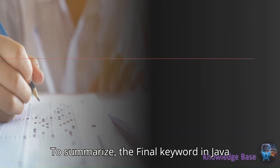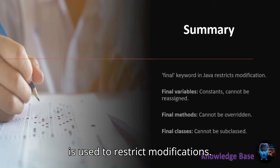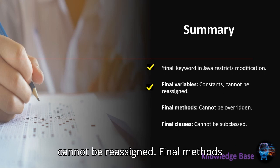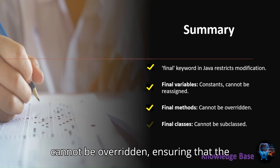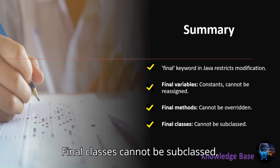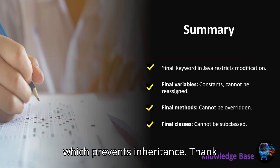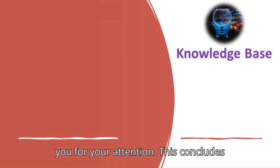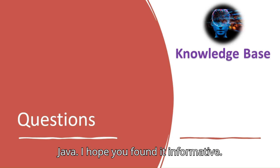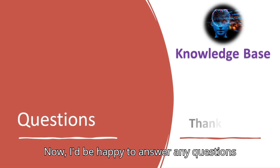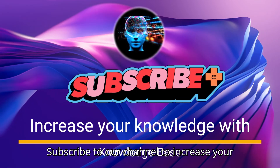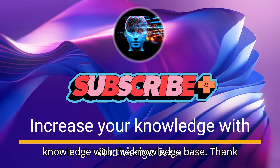To summarize, the final keyword in Java is used to restrict modifications. Final variables act as constants and cannot be reassigned. Final methods cannot be overridden, ensuring that the method implementation stays the same. Final classes cannot be subclassed, which prevents inheritance. Thank you for your attention. This concludes our presentation on the final keyword in Java. I hope you found it informative. I'd be happy to answer any questions you may have about the final keyword. Subscribe to our channel to increase your knowledge with the Knowledgebase. Thank you.